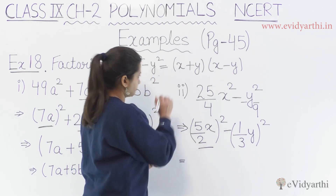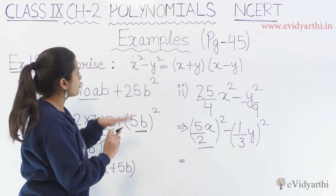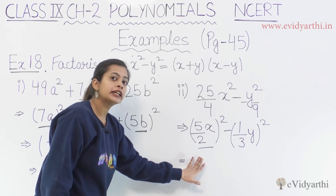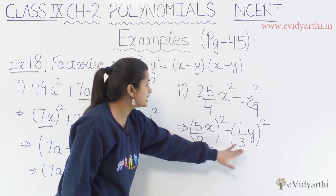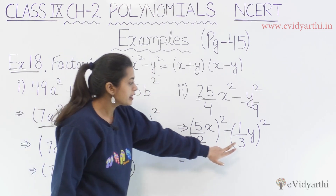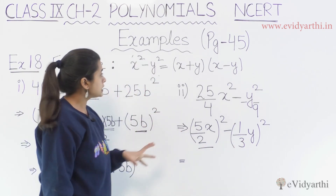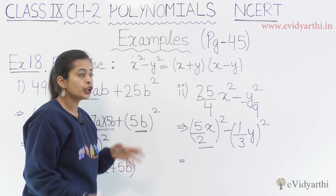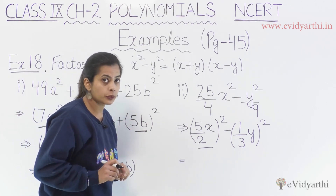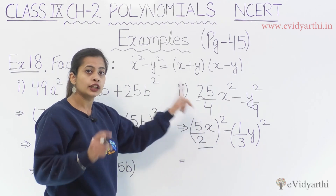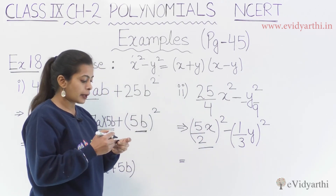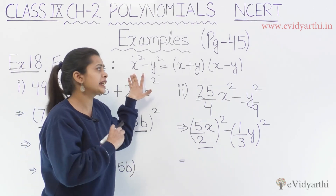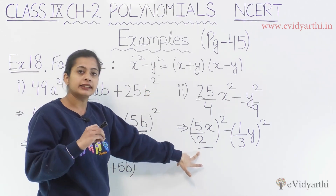If the first term is x, then what is the first term here? It is 5 by 2 times x. Similarly, the second term is 1 by 3 times y. This is why I tell you to use the a and b terms in the formula — you won't confuse the concept where x in the formula and the variable x in the question are different. There is no confusion. The variable can be any number or any term.